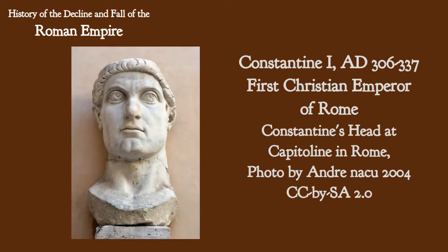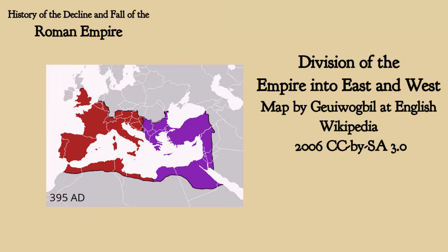Around 330 AD, the great Constantine the First — the first Christian emperor of Rome — relocated the capital to Constantinople, which is on the Bosphorus straits between Europe and Asia. There's a famous song about that from the 50s: 'Istanbul, not Constantinople.' The empire ended up splitting, and the Western Empire didn't last a lot longer.